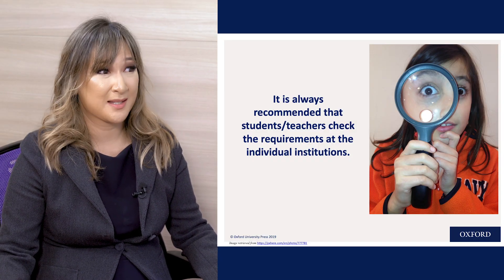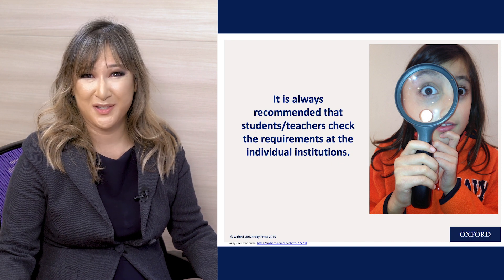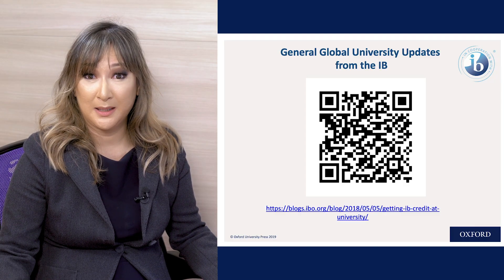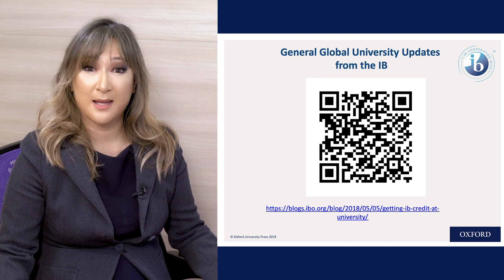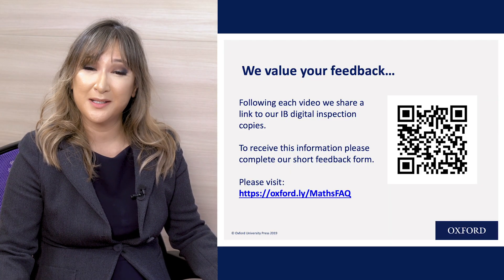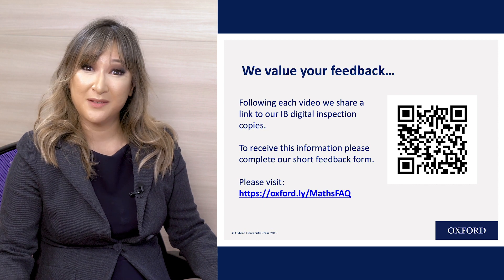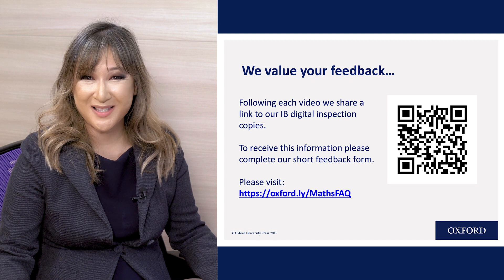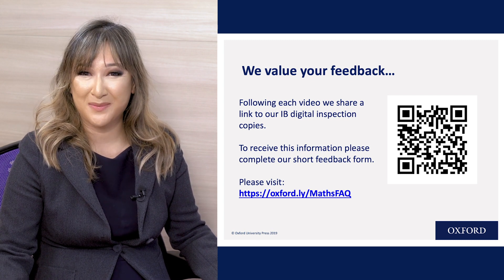As noted, the university recognition process is complex, and it is always recommended that students and teachers check requirements at individual institutions as they are updated regularly. For general global university updates from the IB, scan the QR code shown to see a list of universities collected by the IB. We value your feedback — if you'd like to give feedback on this video and receive digital copies of the OUP Mathematics Diploma Course books, please scan the second QR code. Thank you for listening and I hope to see you soon.